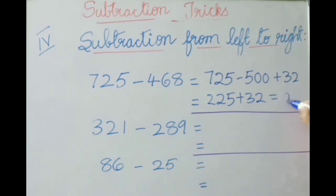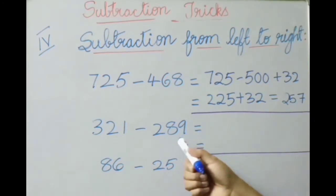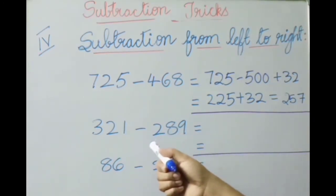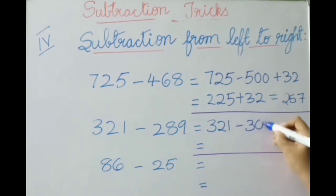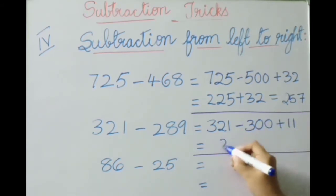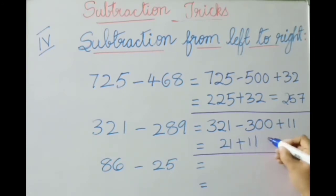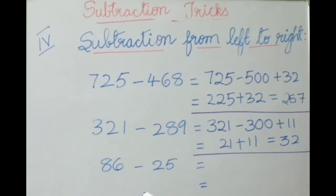See the next example: three hundred twenty-one minus two hundred eighty-nine. Two hundred eighty-nine can be written as minus three hundred plus eleven. So: three hundred twenty-one minus three hundred plus eleven — three hundred twenty-one minus three hundred is twenty-one, plus eleven is thirty-two. The answer is 32. Next example: eighty-six minus twenty-five. Twenty-five can be written as minus thirty plus five. Eighty-six minus thirty is fifty-six, plus five — the answer is sixty-one.